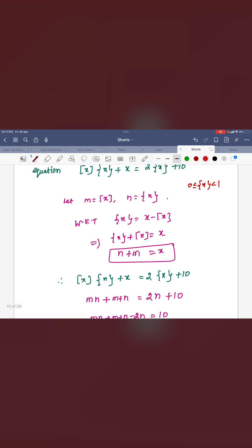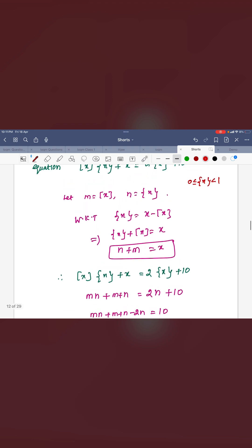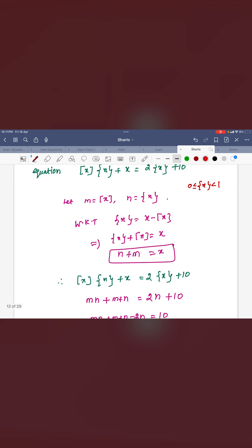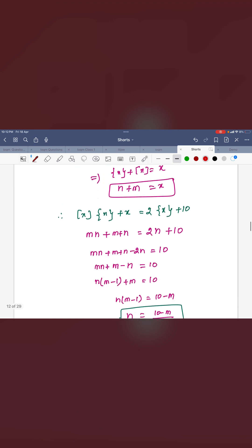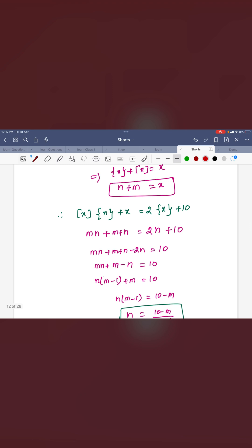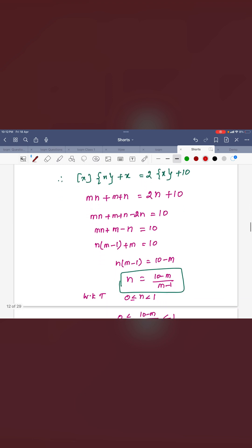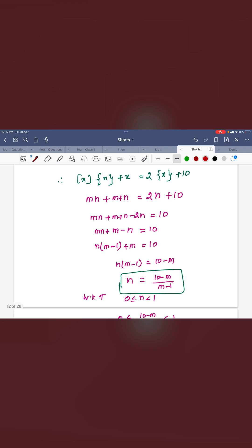You already know that fractional part function's definition is what? x minus greatest integer function. Then any real number you can write as the sum of the fractional part function and the greatest integer function. Here greatest integer function we are considering m and n here is the fractional part function. Now just you can substitute it here. So you can see here the n into m minus 1 is equal to 10 minus m. That means n is equal to 10 minus m by m minus 1.